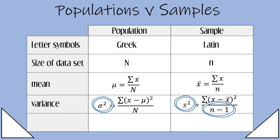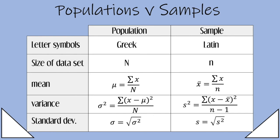And finally, we have standard deviation. For each, it's just the square root of the variance. So we have sigma and s.